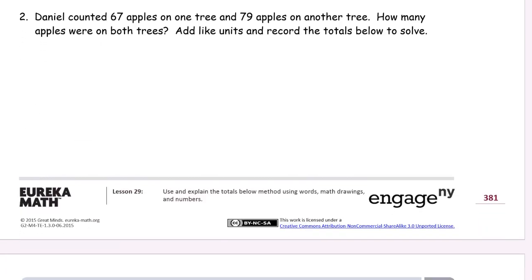Daniel counted 67 apples on one tree and 79 apples on another tree. How many apples were on both trees? Add like units and record the totals below to solve. So all that means is draw a tape diagram and use totals below to add.